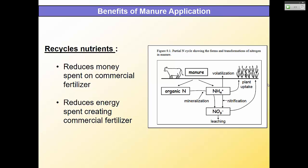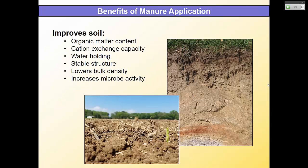It can reduce the money you spend on commercial fertilizer. What you'll find in nutrient management is there are often not enough nutrients in manure to apply all the nitrogen needed, because there's often too much phosphorus. But you can add some manure and buy the rest as commercial fertilizer. It can also reduce the energy spent creating commercial fertilizer, and it improves soil organic matter content.